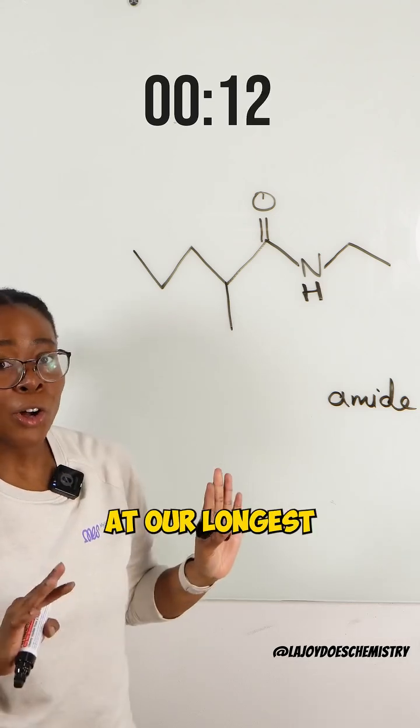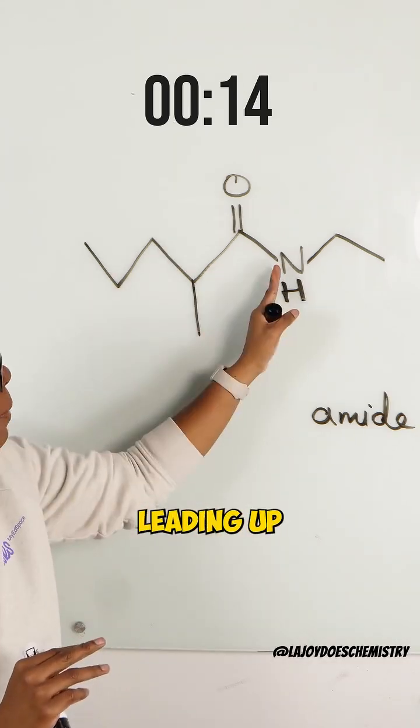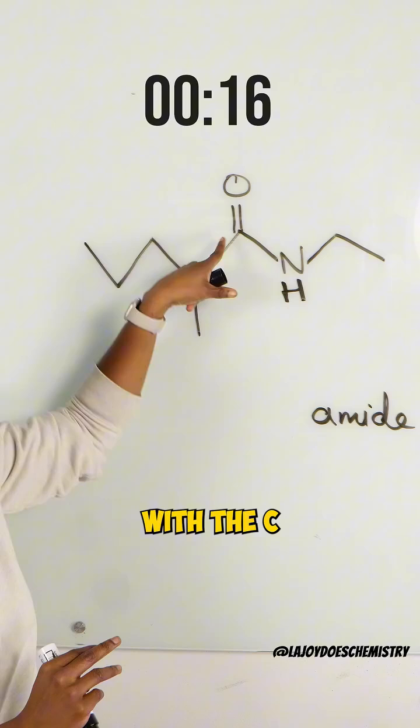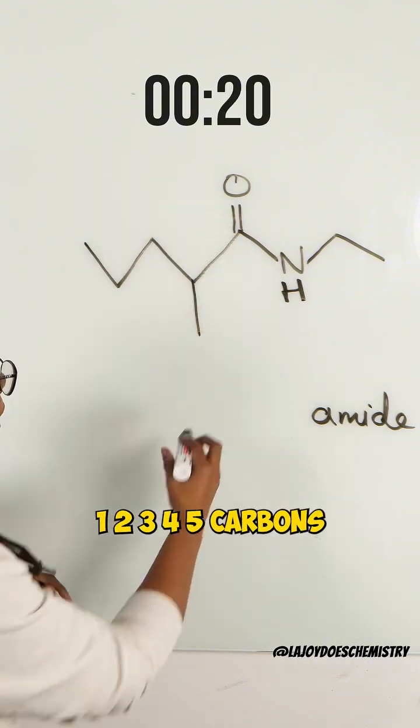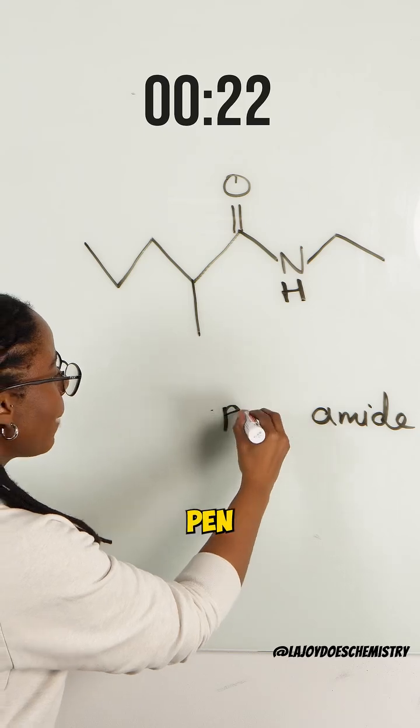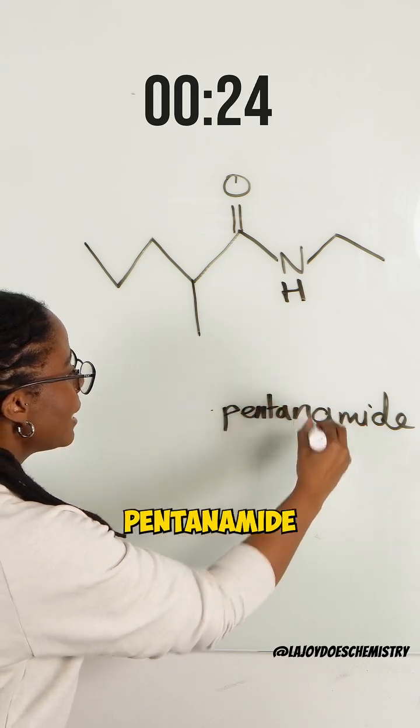Then we look at our longest carbon chain leading up to the nitrogen, so the side with the C double bond O. That's one, two, three, four, five carbons, making this pentanamide.